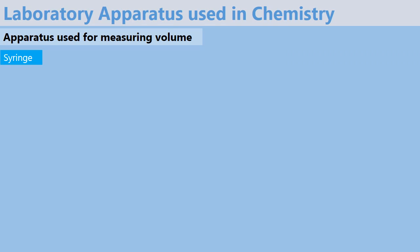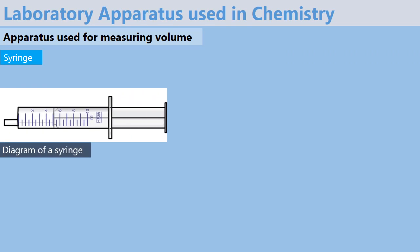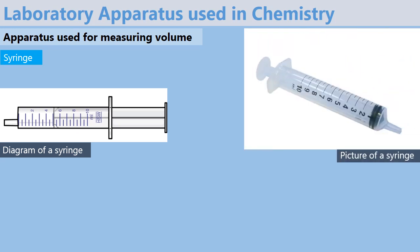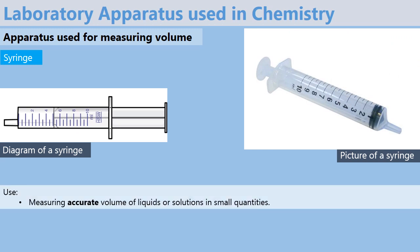After that, we have a syringe. A syringe is like the one you have already met when you are in hospital and you are sick and the doctor decides to give you an injection. Here is a nice diagram just to remind you how it looks like, and another picture of the same. A syringe is used for measuring accurate volume of liquids or solutions, usually in small quantities, but not always.